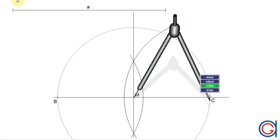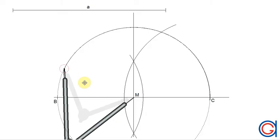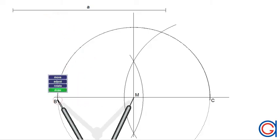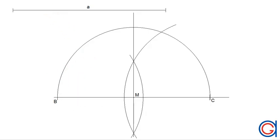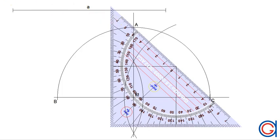The final step is setting our compass on midpoint M and with the radius MC we draw a semicircle from vertex C to vertex B. Where the semicircle cuts the perpendicular bisector will be the final vertex A.